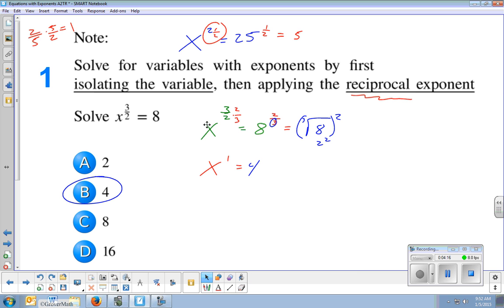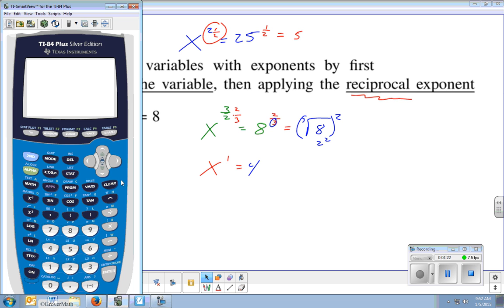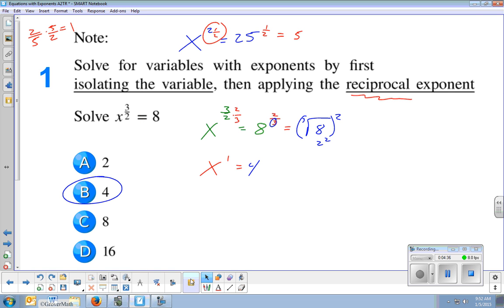that your bottom number of the fraction exponent is your root number. So that's like saying the cubed root of 8 and that whole thing squared. And the cubed root of 8 is 2 and 2 squared is 4. So x equals 4. And of course, you can type into your calculator 8 raised to the 2 thirds. Just be careful with parentheses and things like that.